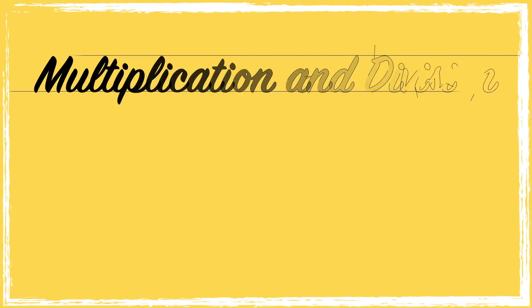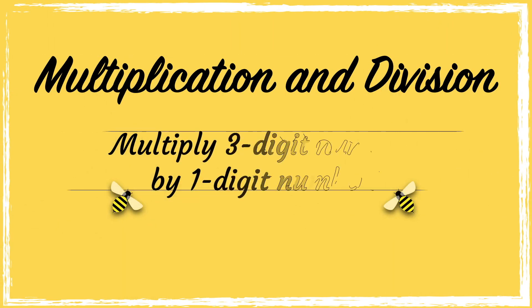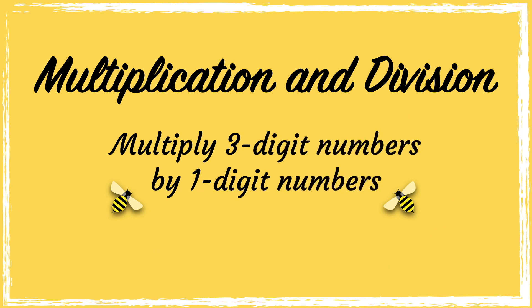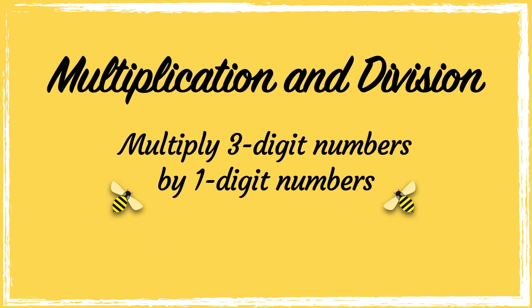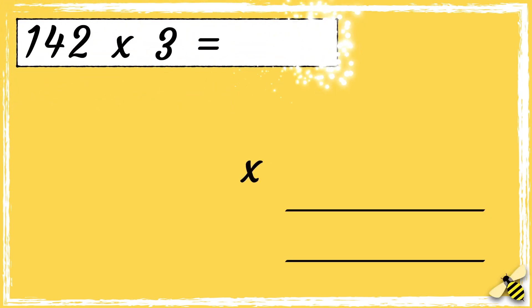In this video we'll be multiplying three digit numbers by one digit numbers using short multiplication. Here is a number sentence: 142 multiplied by 3. It's really important to line the numbers up correctly when you're doing short multiplication.